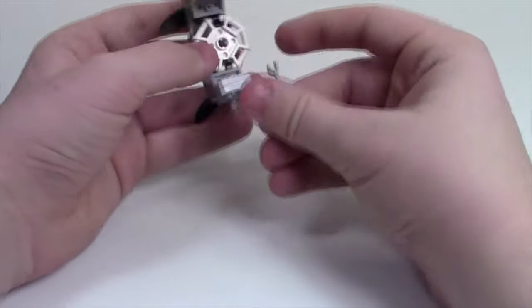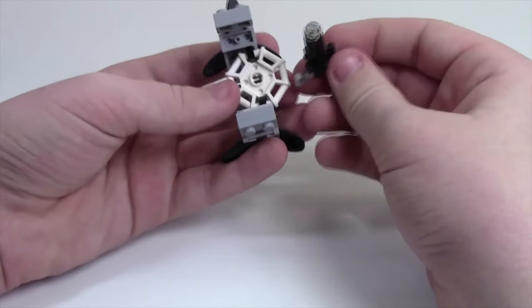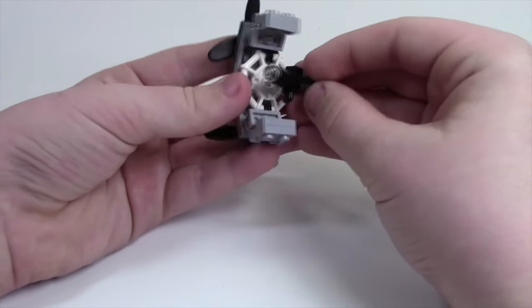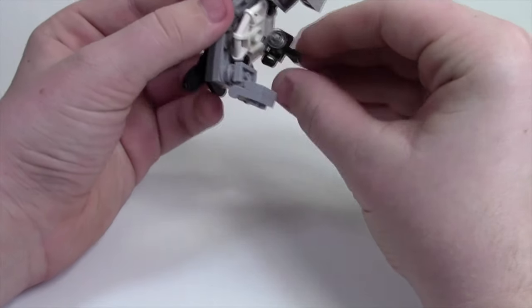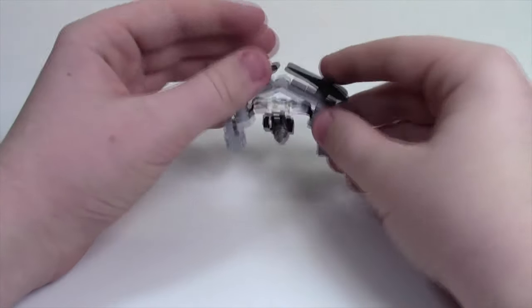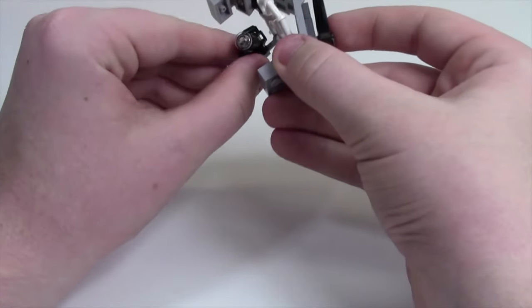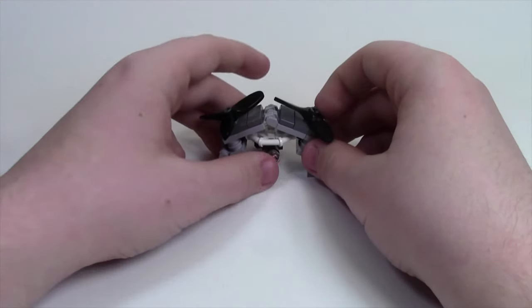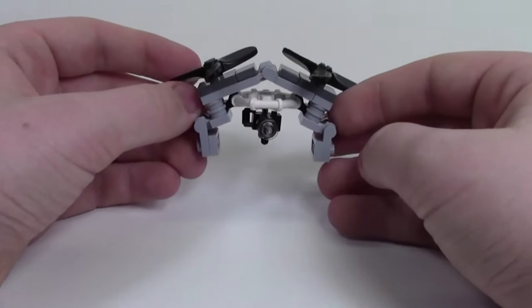And now what you're going to do is you're going to take the camera and the reason I put it on the diagonal is because now the camera perfectly aligns at the back. You can put your camera on there and position it just like this. Position your camera however you want. And there you go. Your drone is complete.